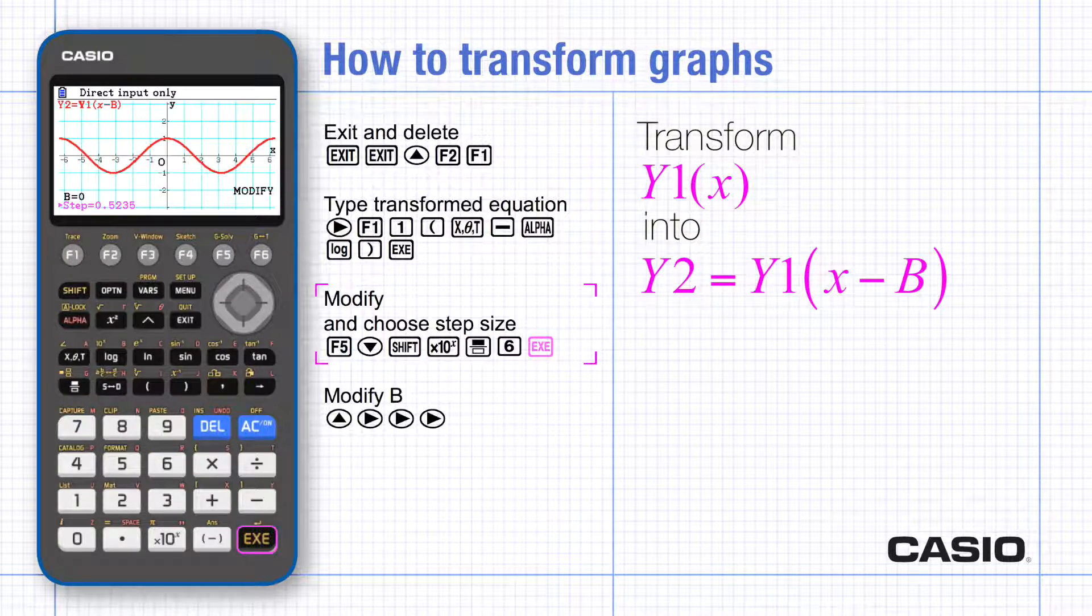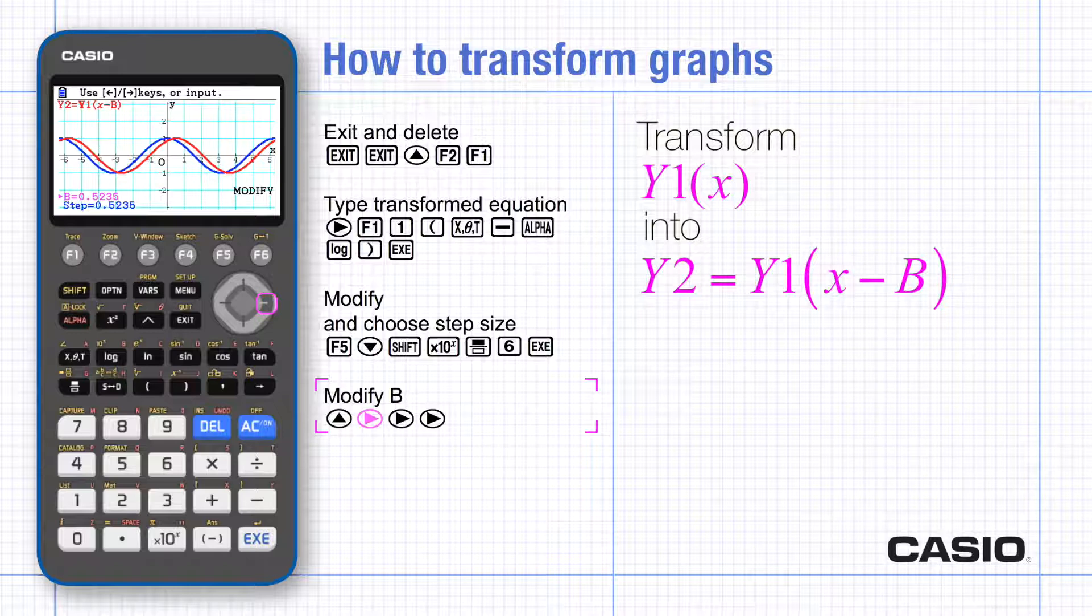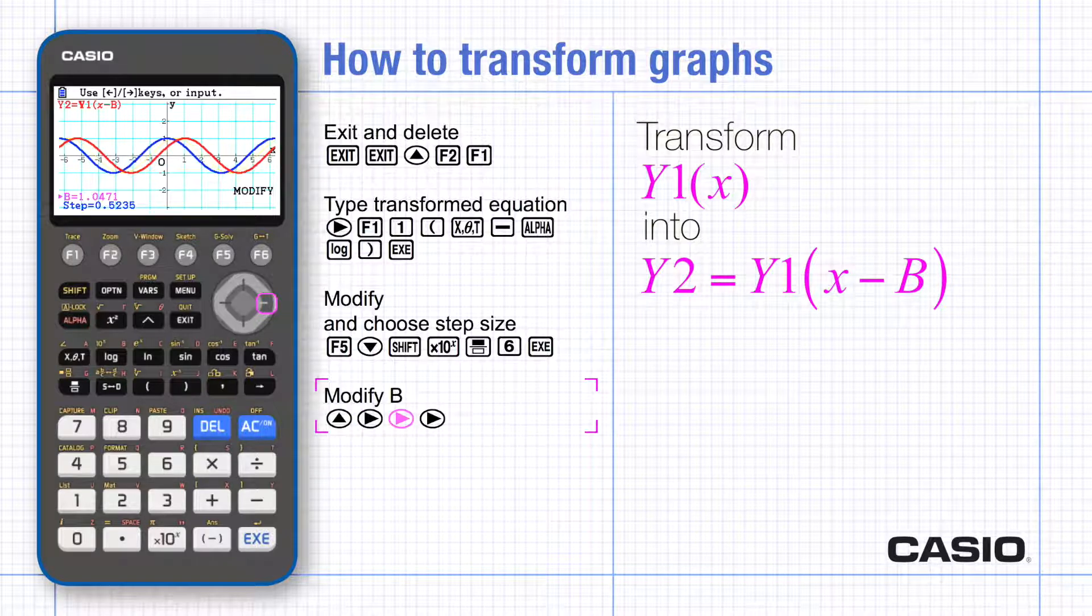Now when you scroll back up to b and then as you scroll sideways you can change the value of b in steps of pi over 6. Notice the graph is translated in the x direction by b.